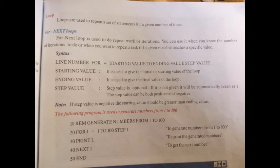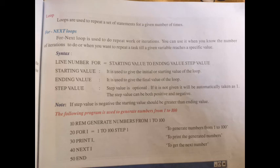The same logic is implemented in programming. For example, we want to print numbers from 1 to 100. It has to increment 1 by 1 and print up to 100. We can't type 100 lines for printing 1 to 100, so we use a small logic to increment a value. See the syntax: line number, For i = starting value to ending value, step value. For i = 1 to 100, step 1.